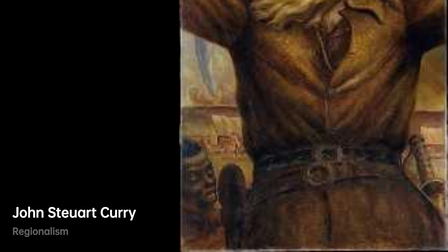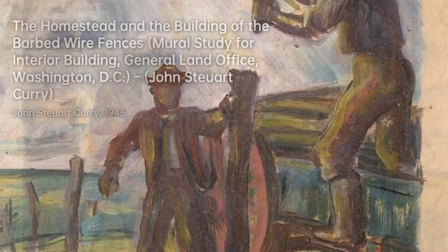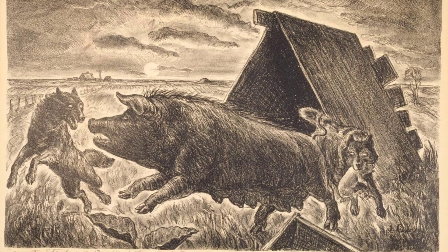His paintings often portrayed farm life, animals, tornadoes, prairie fires, and the turbulent Bleeding Kansas period. However, his works were not well-received by Kansans, who felt that they did not present a positive image of the state.